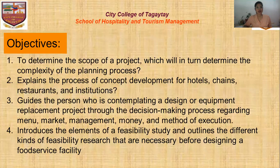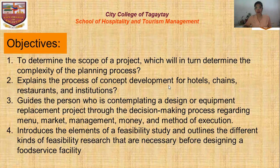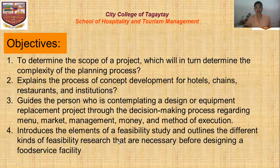The objectives: first, to determine the scope of a project, which will in turn determine the complexity of the planning process. Then, explain the process of concept development for hotels, chains, restaurants, and institutions. And then, what are the guides for the person who is contemplating a design or equipment replacement project — the decision making process, recording menu, the market, the management, the money, and methods of execution.